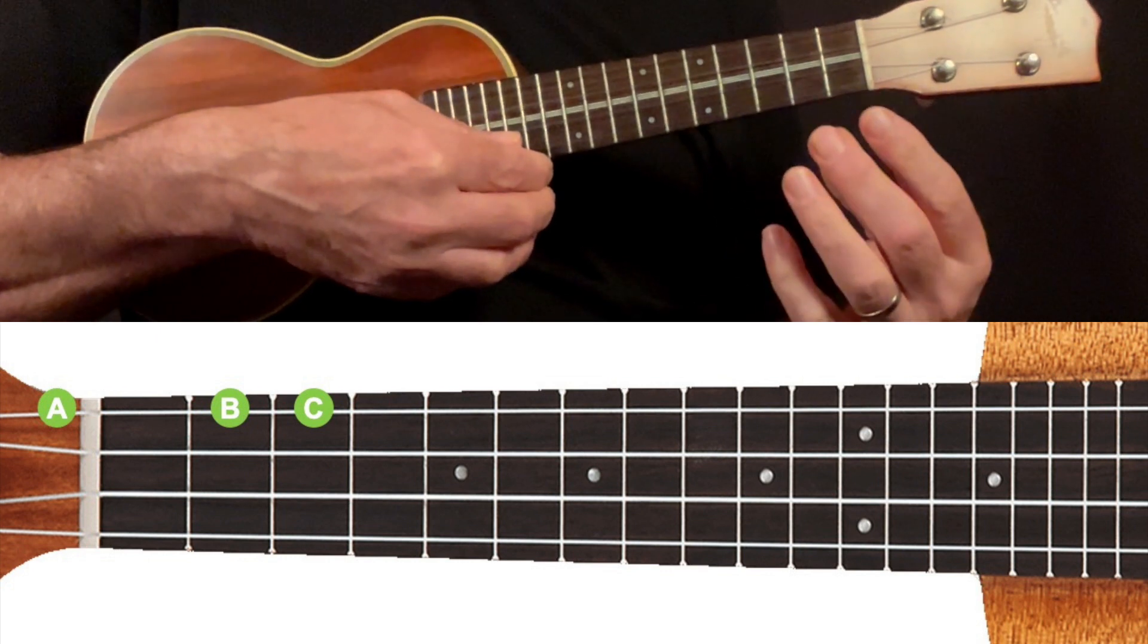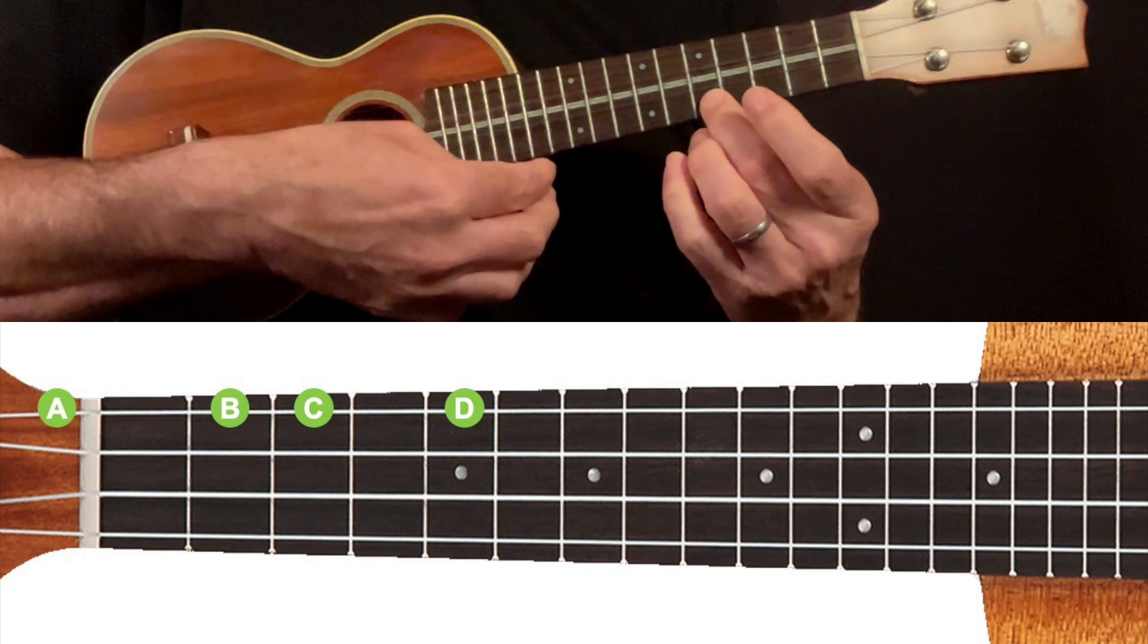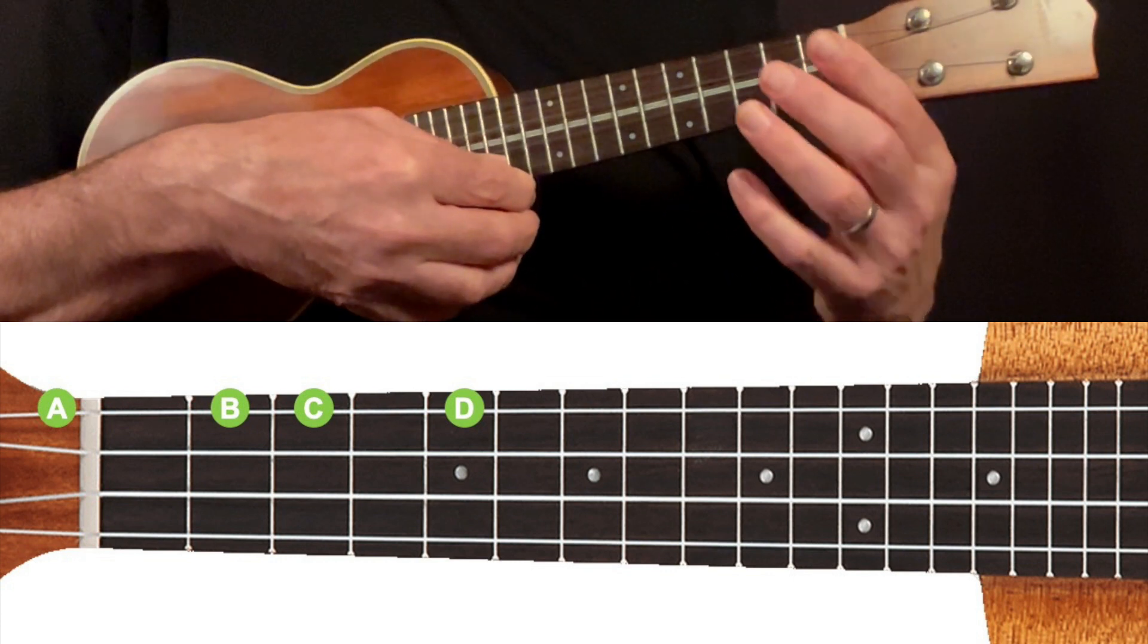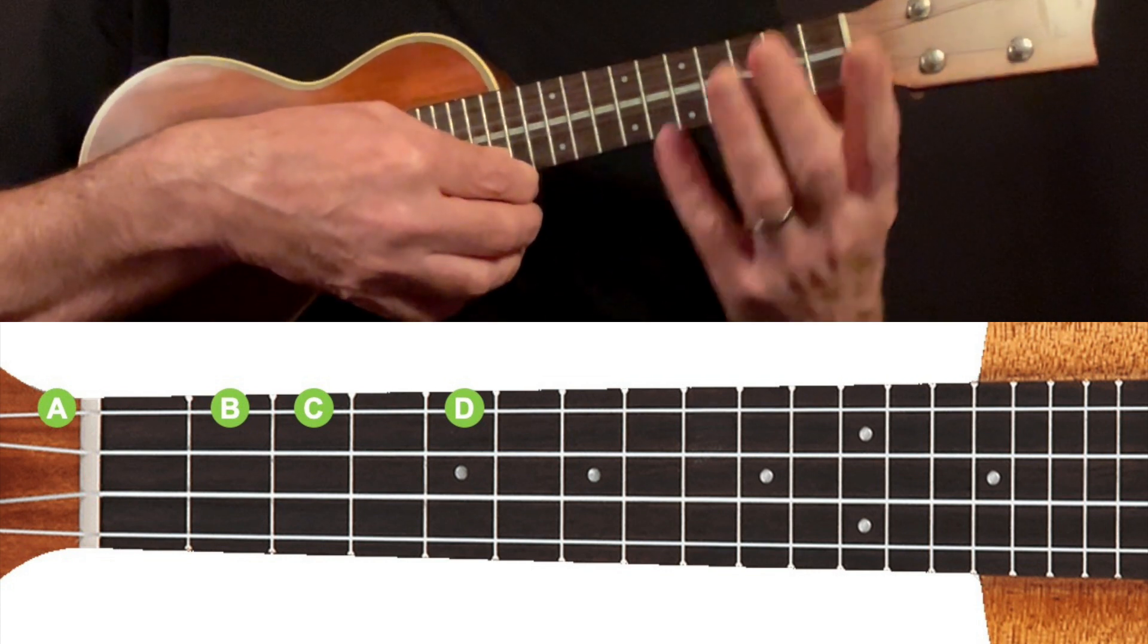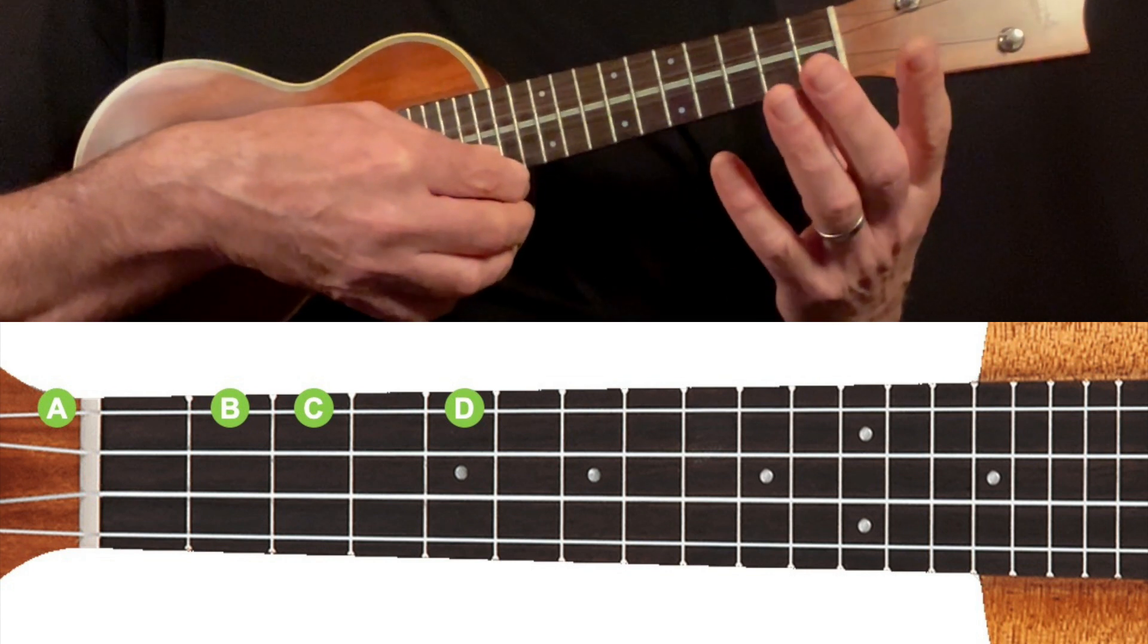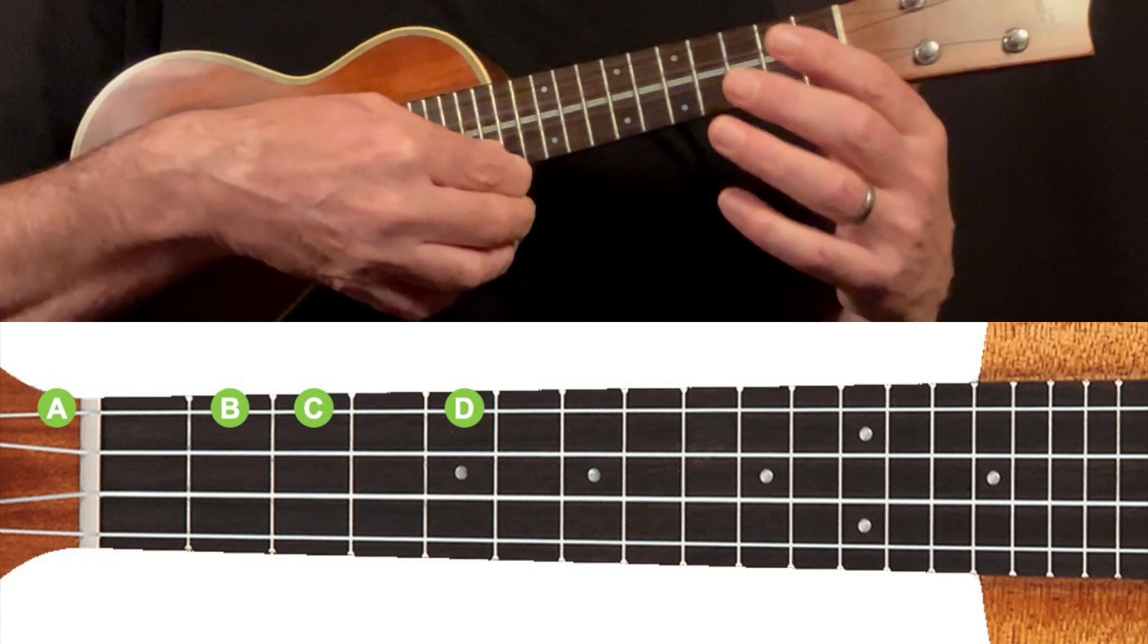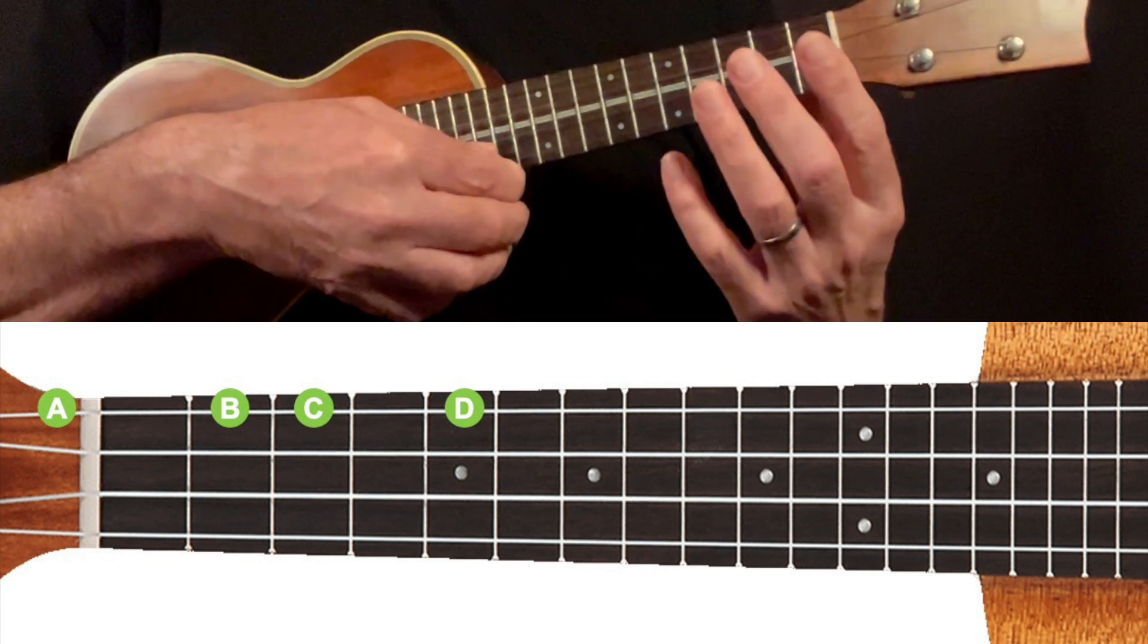Next, if we move up the fretboard to fret the string at the fifth fret, we now have a D. It's possibly worth noting that many ukuleles will have dot markers in the center of the fretboard, and sometimes on the top side of the neck as well, at the fifth, seventh, tenth, and twelfth fret, which are just there to help you with referencing which fret you're at. Again, you've probably noticed we missed playing a note at the fourth fret here, and I'll get to that shortly.